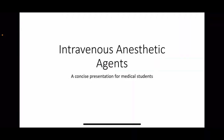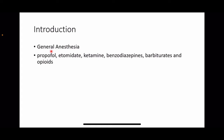In this video, we are going to see about intravenous anesthetic agents. This is a concise presentation for medical students. Intravenous anesthetic agents are used in general anesthesia. The various drugs in this class include propofol, etomidate, ketamine, benzodiazepines, barbiturates, and opioids. We will be dealing mainly about propofol, etomidate, and ketamine in this video.